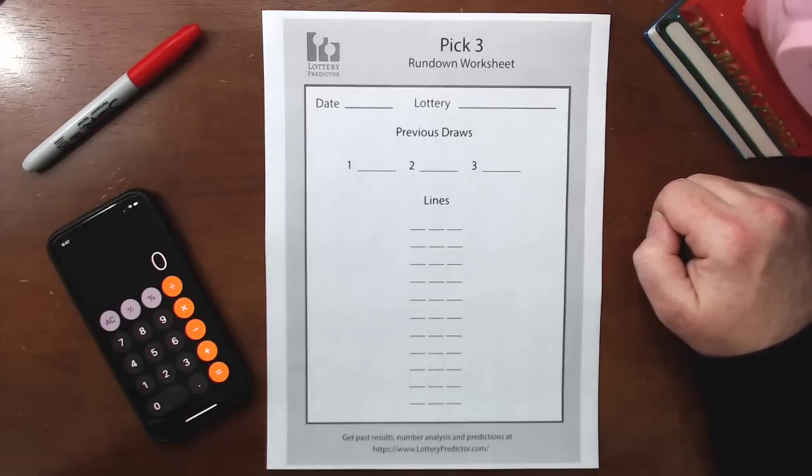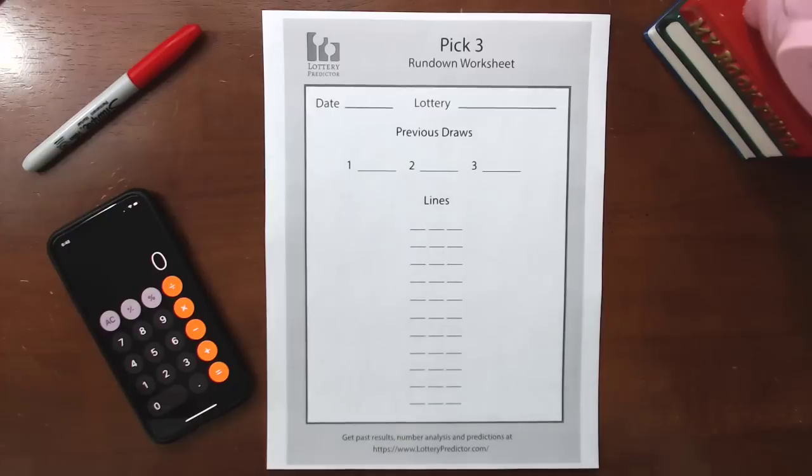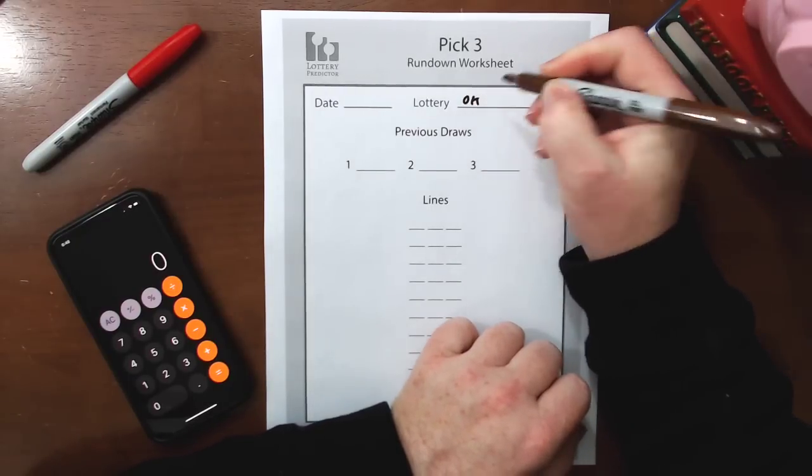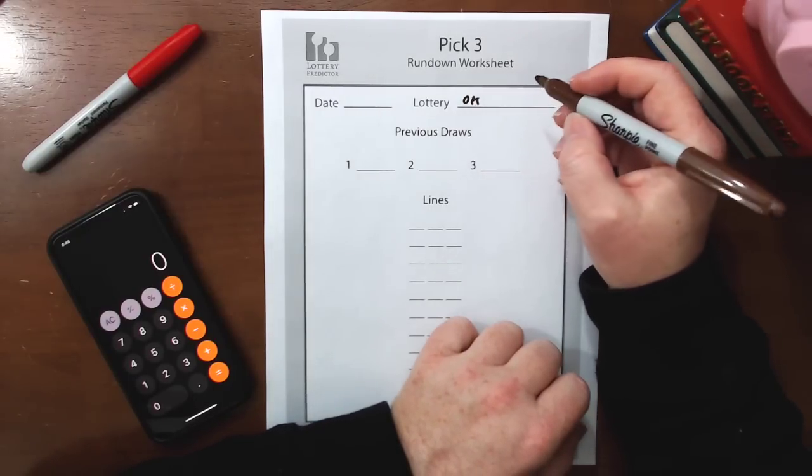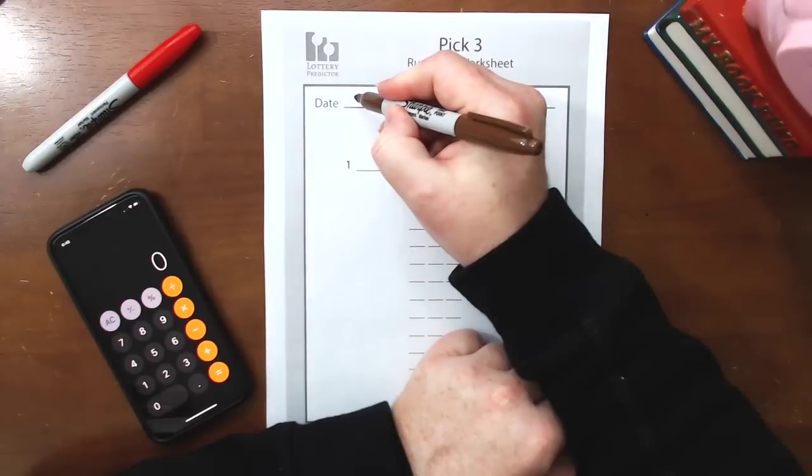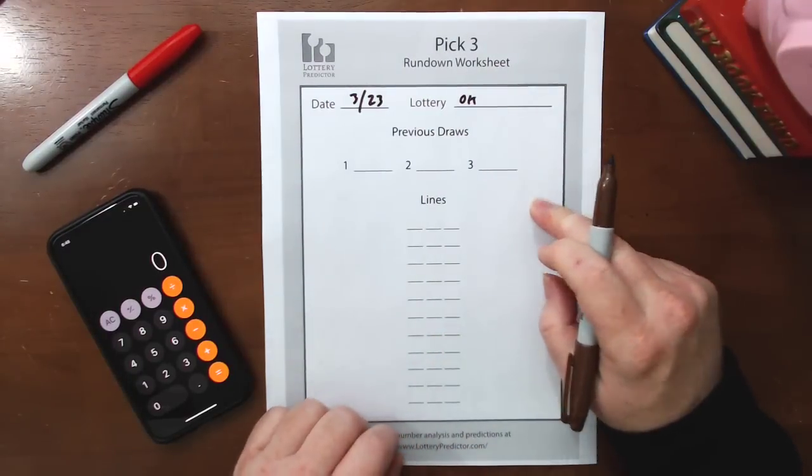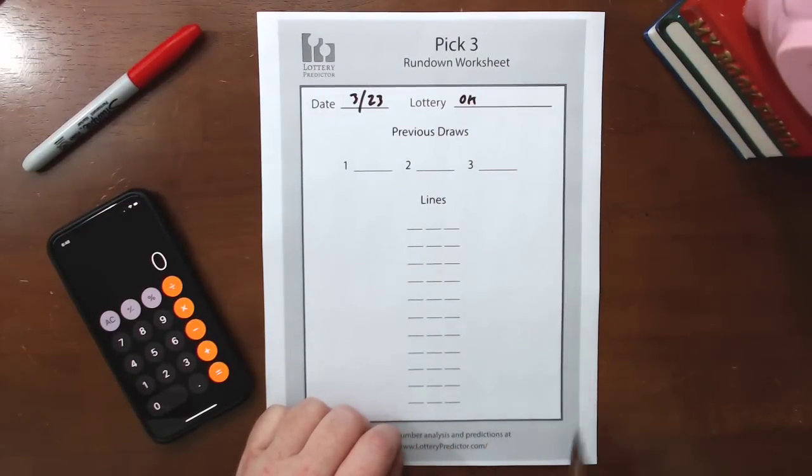So I'm going to do this for a couple of different states so you can see how it works, and then you can try it in your state. We're going to start with Oklahoma for our first state, specifically the drawing on the 23rd. We're using our Pick 3 Lines Rundown Worksheet. If you want a copy, you can download it for free from lotterypredictor.com. I'll leave a link in the description.